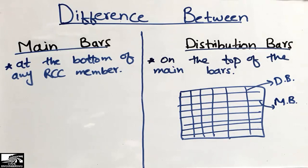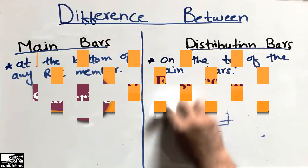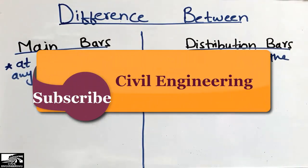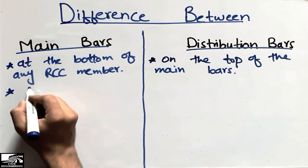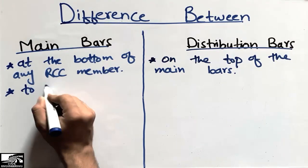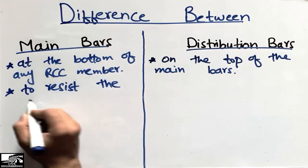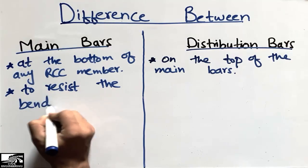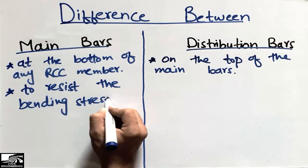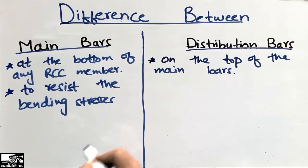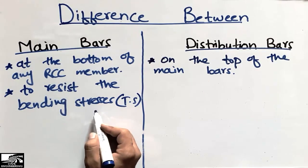Coming to the second difference: main bars are used to resist the bending stresses. They are usually provided to resist the bending stresses in any RCC member, and most commonly the tensile stresses — they are mostly used to resist the tensile stresses.